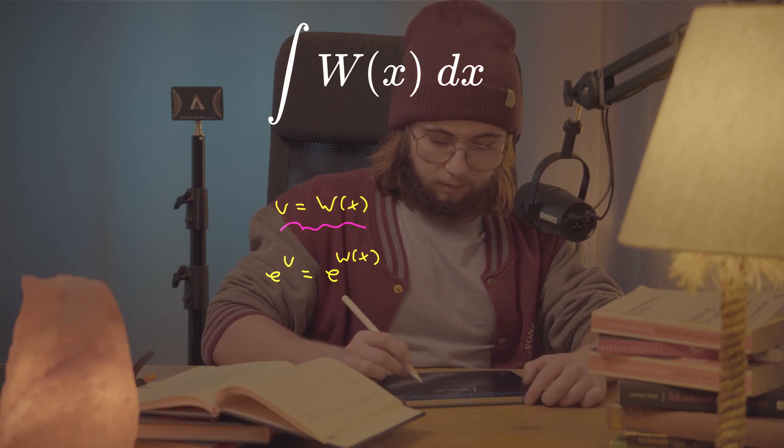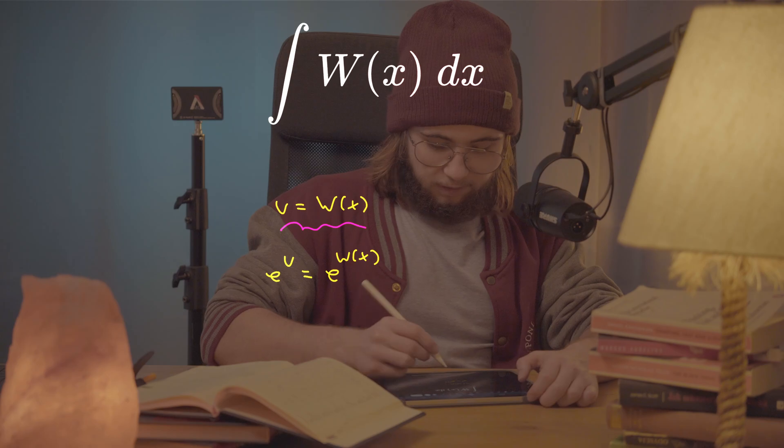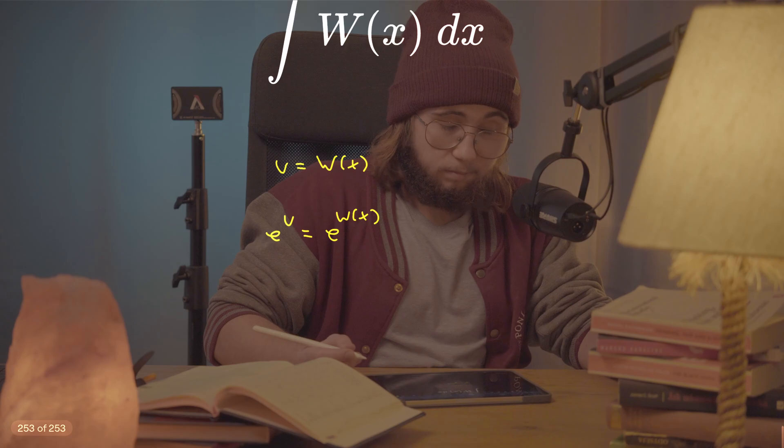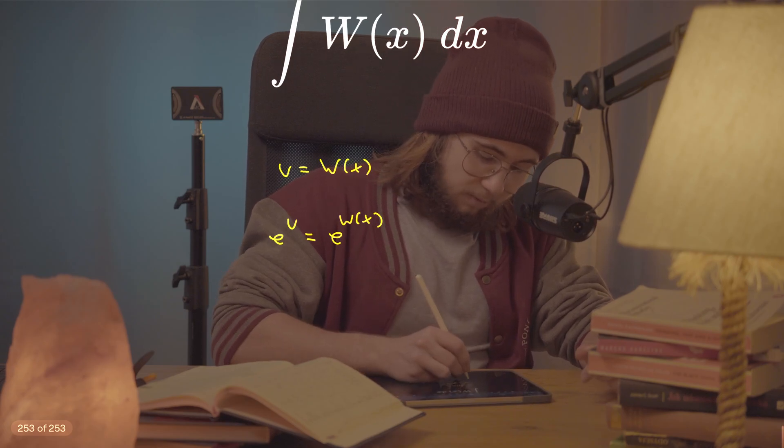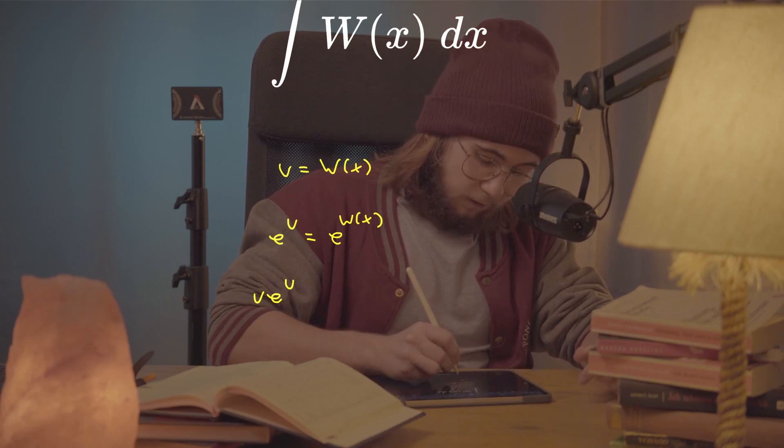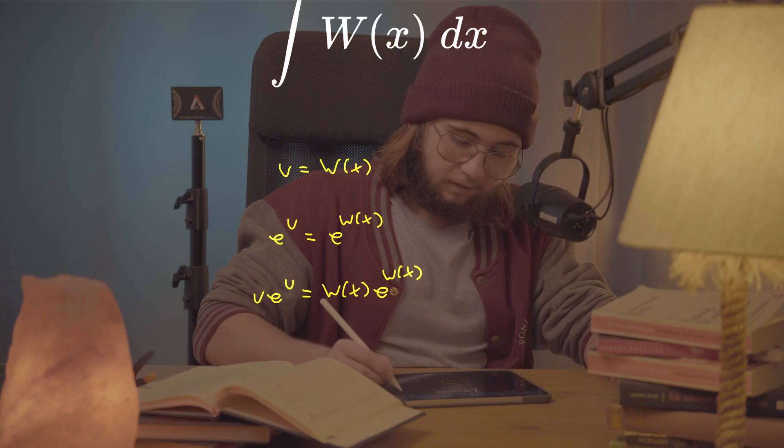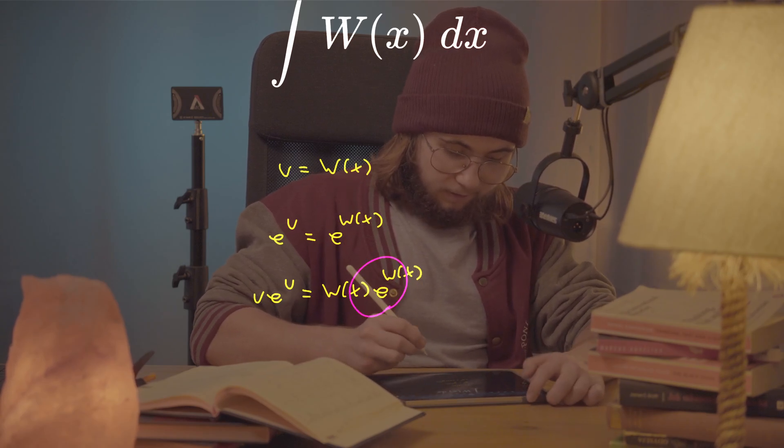What did I do now? That u is the Lambert W of x to multiply both sides by u or rather the Lambert W, which is going to give me u times e to the u is W of x times e to the W of x. But as I've already said today, this thing here is x.